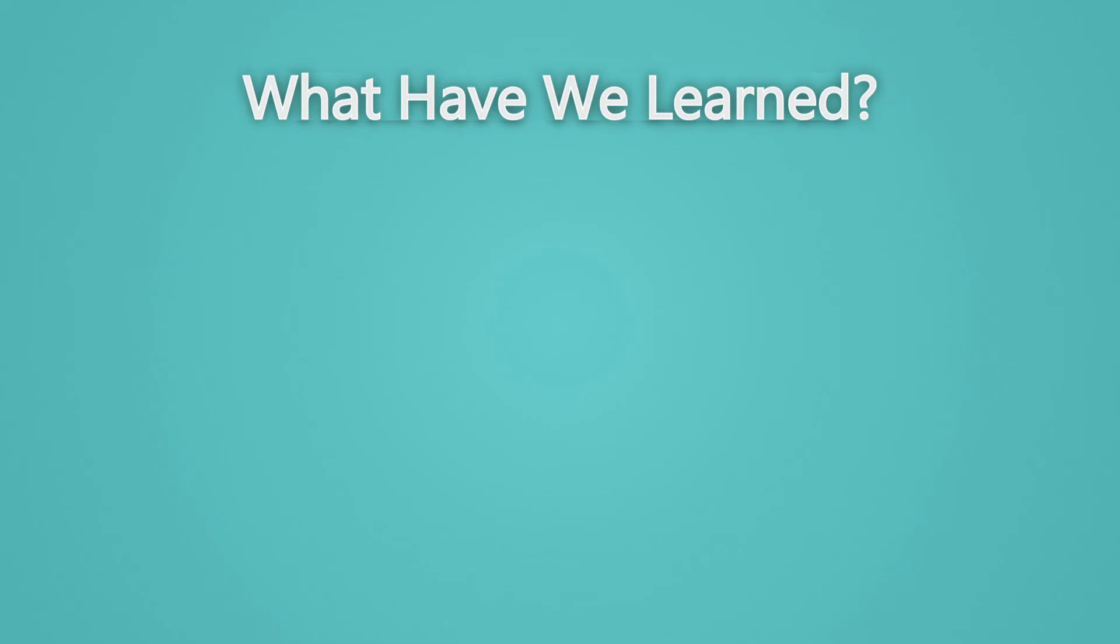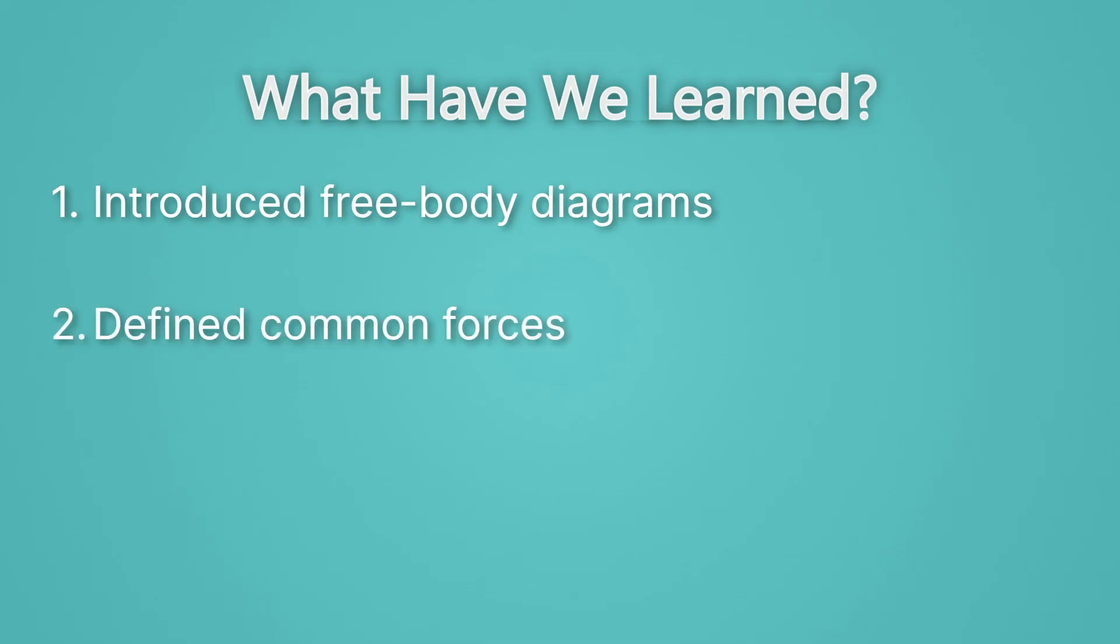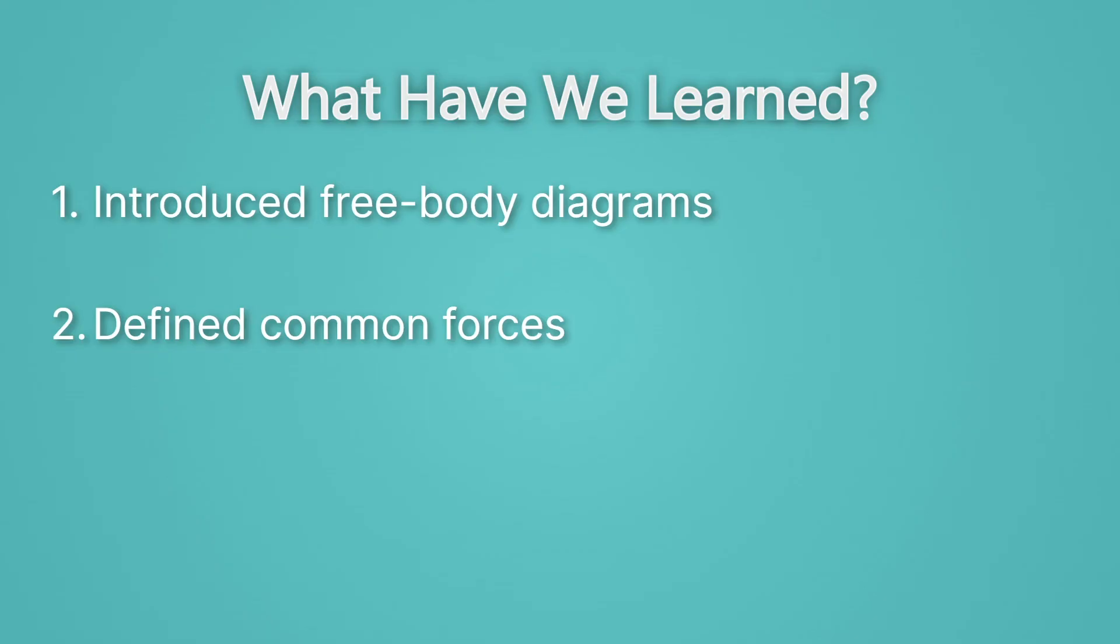Let's take a look at what we've learned. We've introduced free body diagrams, a really useful way to start thinking about the forces acting on an object. We've defined common forces. Most importantly, we looked at the force of tension, which is whenever we have something hanging, basically, on a rope or a chain. We've looked at the normal force, which happens whenever something rests on a surface where there's gravity. And we looked at the force of friction, which always opposes motion, and it can be either air resistance or resistance from being in contact with a surface. Lastly, we practiced drawing free body diagrams.